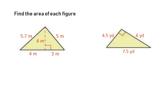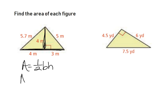Moving on to triangles: the formula is one-half base times height. They've given lots of information on this triangle, but the height is always the perpendicular — that's the 4. It's perpendicular to the base, which is a total of 7 units (you add the 4 and 3 together). So: one-half times 7 times 4 gives 14 square meters.